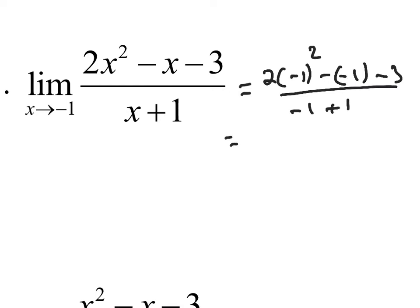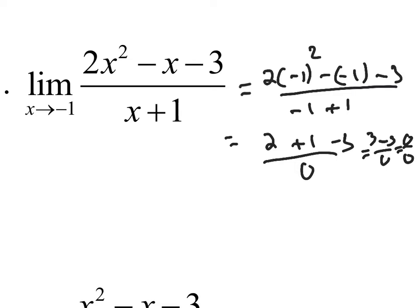Negative 1 squared is 1, times 2 is 2. Minus negative 1 is plus 1, minus 3, over 0. That's 2 plus 1 is 3, minus 3 is 0 over 0. We gave that a name — it's indeterminate. When you see this, make sure you let the grader know this is indeterminate, 0 over 0.